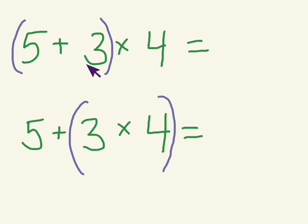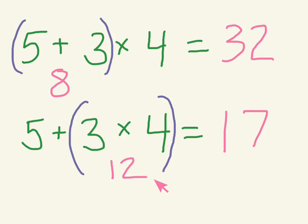So here we need to do 5 plus 3 first. Here 3 times 4 we need to do that first. So 5 plus 3 is going to give me 8, and then 8 times 4 is 32. Down here 3 times 4 first would give me 12, and 5 plus 12 gives me 17. So even though you see we have the same numbers, the parentheses completely changes the number model because the order is different. So we use those to help us figure out which one to do first.